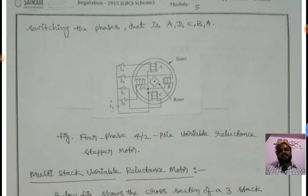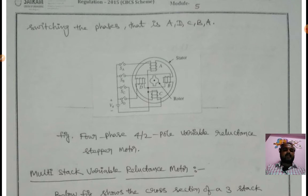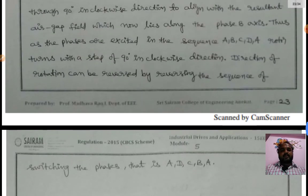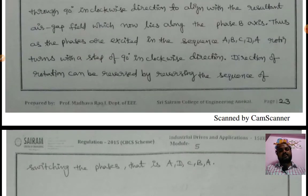So this is the reluctance stepper motor, four phase, four by two. The rotor does not have any winding in reluctance motor. In this clockwise direction, A will go to B, B will go to C, and the position will change.